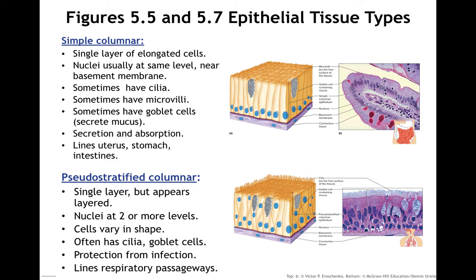Pseudostratified columnar looks like it may be more than one layer, mostly because the nuclei are not all aligned — there are two or more levels of the nuclei. The cells themselves vary in shape, except they will be taller than they are wide. They help protect us from infection, often have cilia, and those cilia in our respiratory passageway beat to move mucus from lower parts to upper parts. They also have goblet cells secreting mucus interspersed within them.